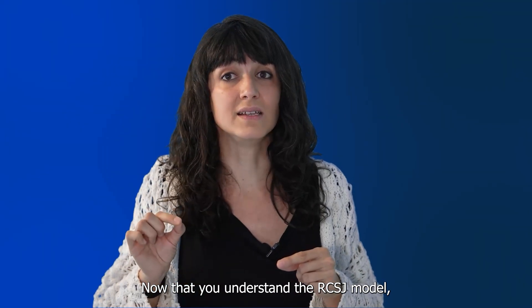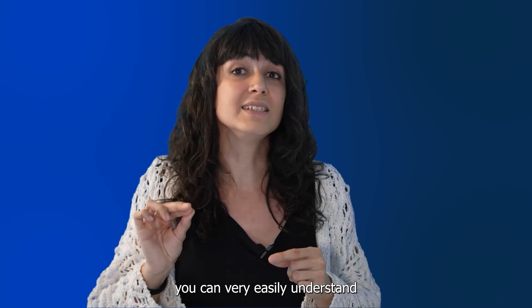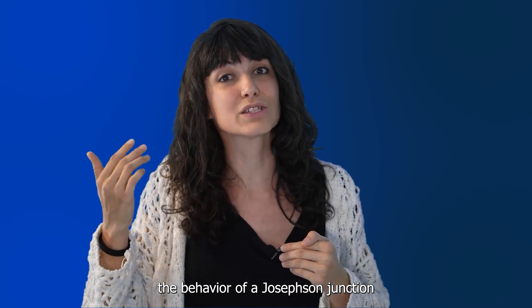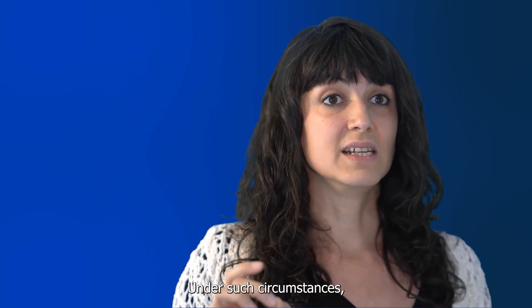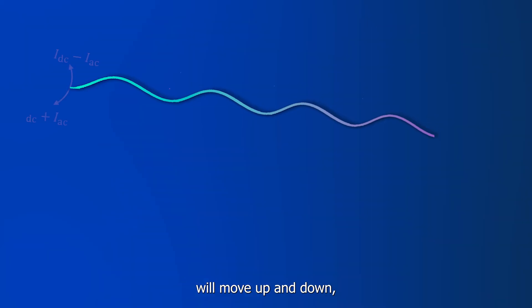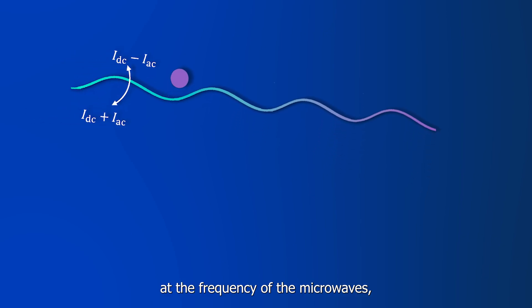Now that you understand the RCSJ model, you can very easily understand the behavior of a Josephson junction under microwave radiation. Under such circumstances, the tilted washboard potential will move up and down at the frequency of the microwaves, which is usually of several tens of gigahertz.